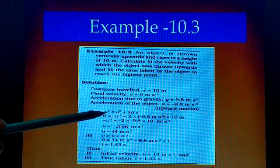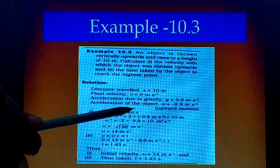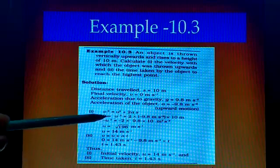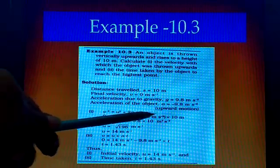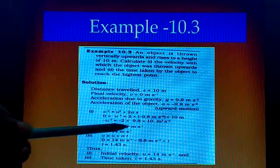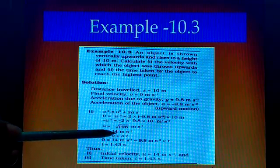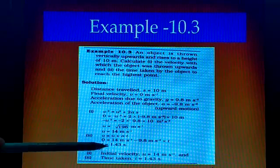Then substitute the values: V² = U² + 2AS, AS means gS. Substitute all the values. We will get U = √196. That is √196. Then U = 14 m/s.